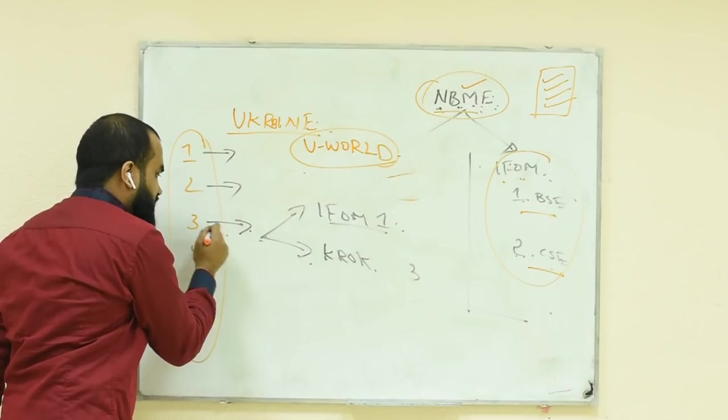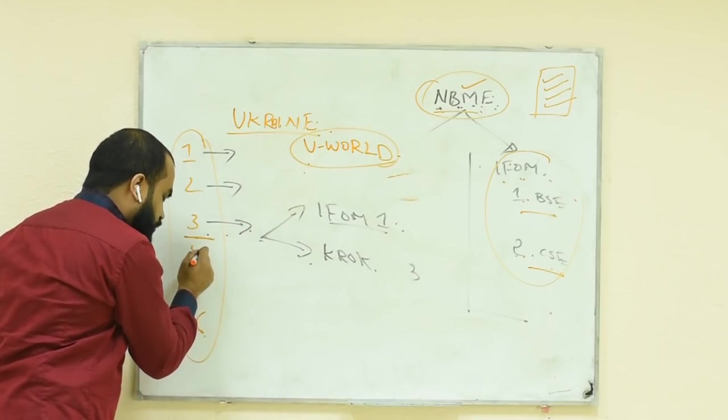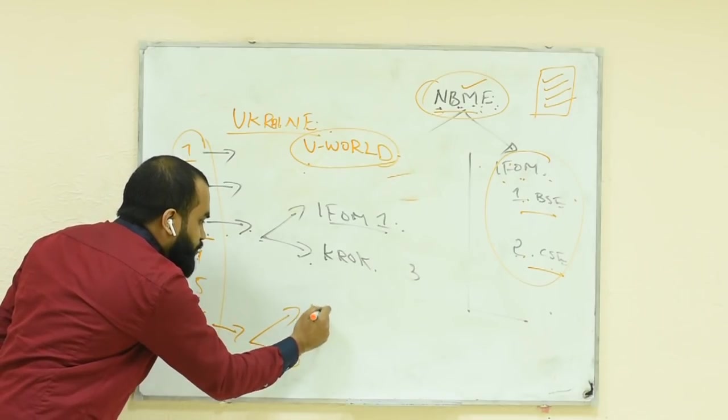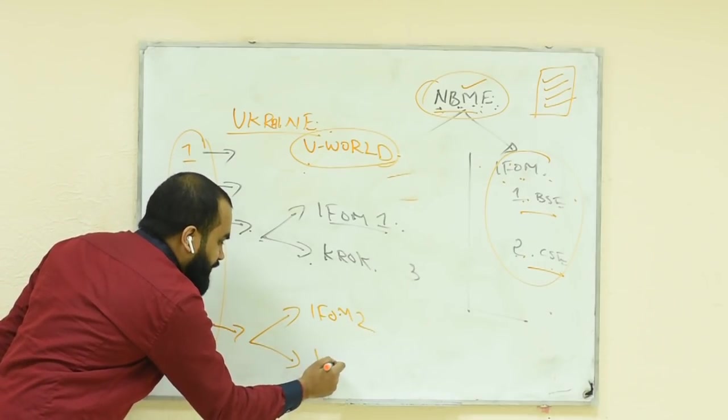UWorld is of two - UWorld 1 and UWorld 2. UWorld 1 for third years till third year, and UWorld 2 from fourth - clinical subjects, 4th, 5th, and 6th years.